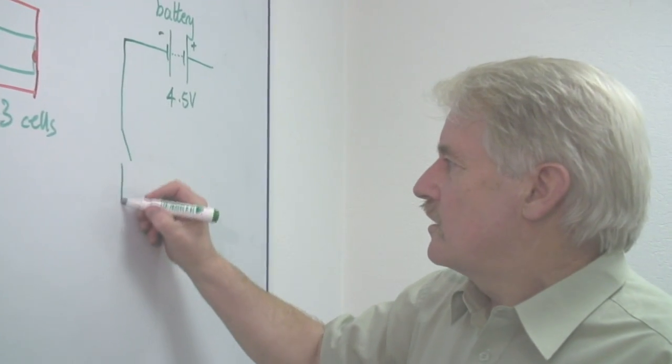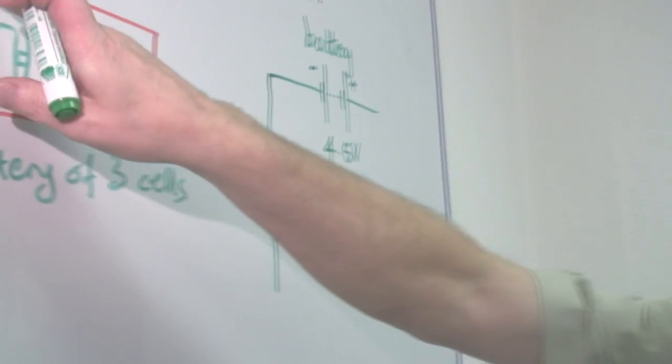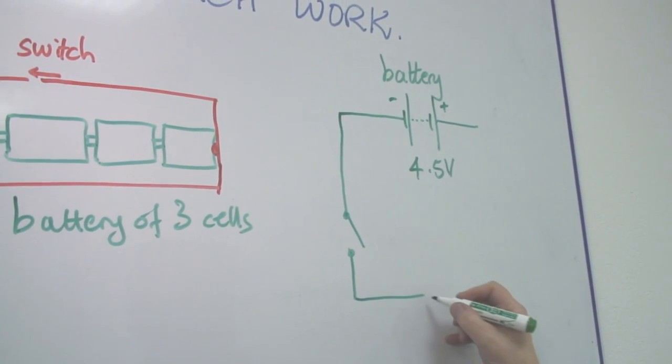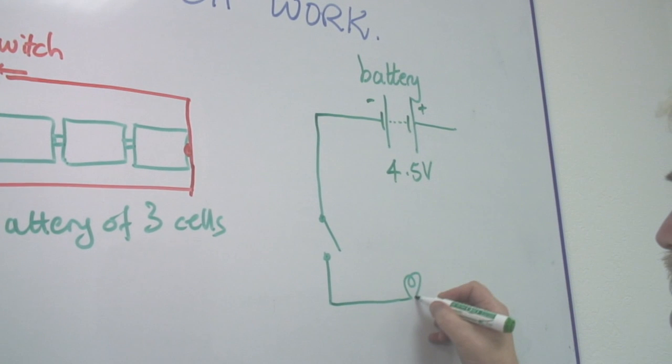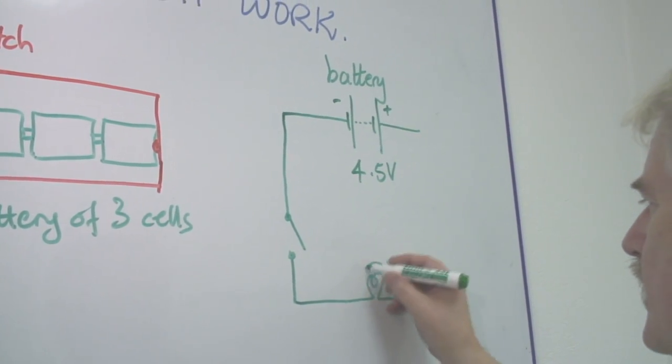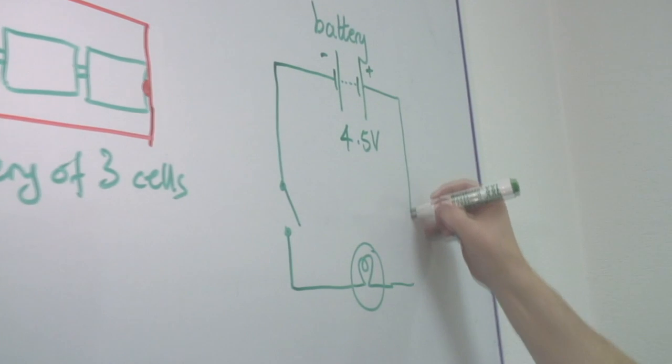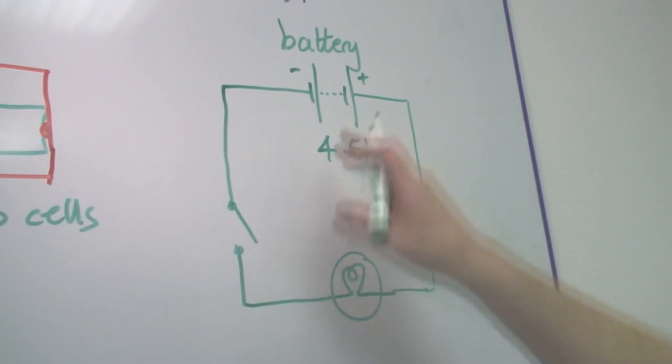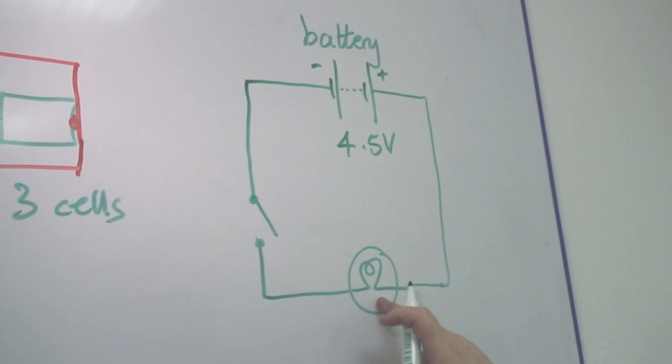We have a switch, which we see here. And we have a lamp. Now this is a filament lamp usually represented in this way. And that is our circuit. It's fairly simple. It's a cell or set of cells, a switch and a lamp.